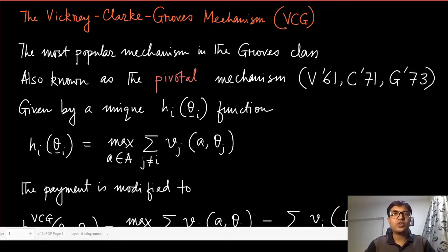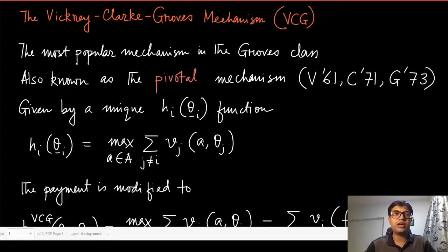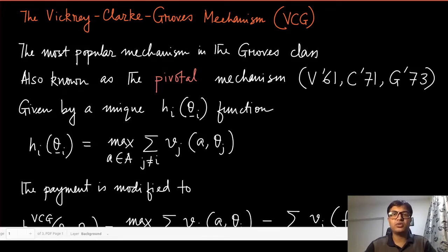We are going to discuss one of the most celebrated mechanisms of mechanism design with transfers, known as the VCG mechanism, named after the inventors Vickrey, Clark, and Groves. This is also known as Clark's pivotal mechanism, and it belongs to the class of Groves mechanisms.